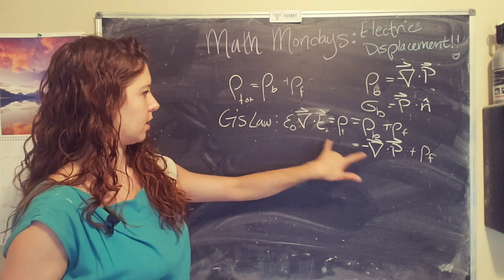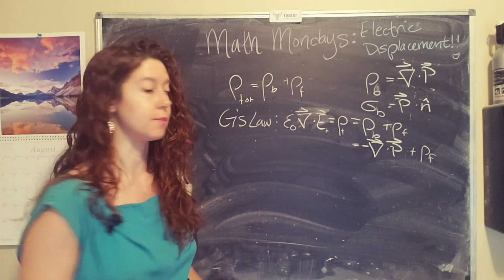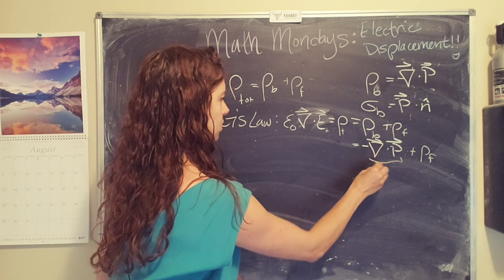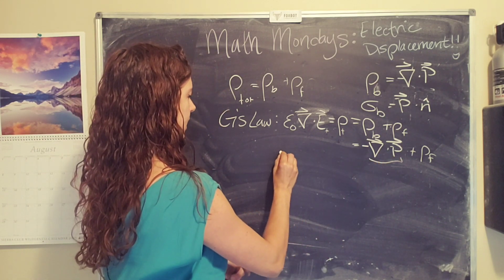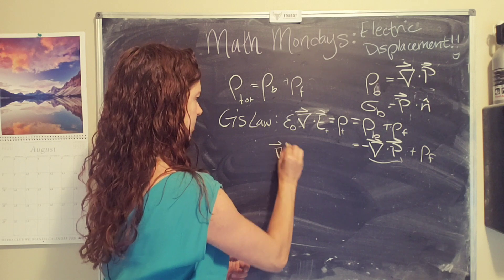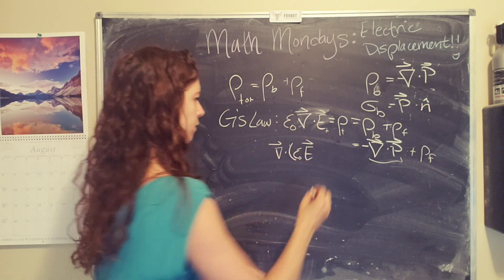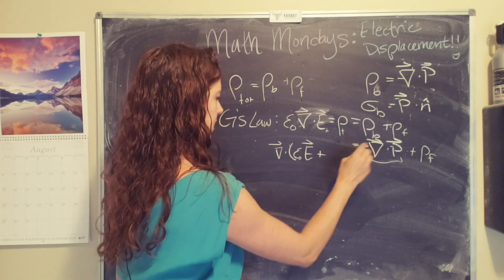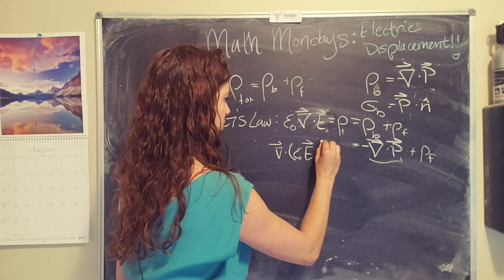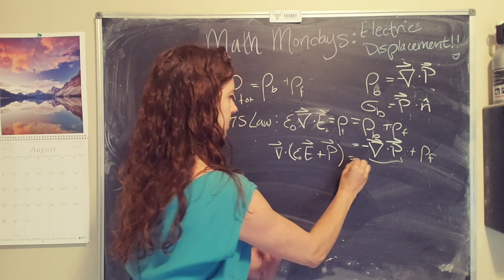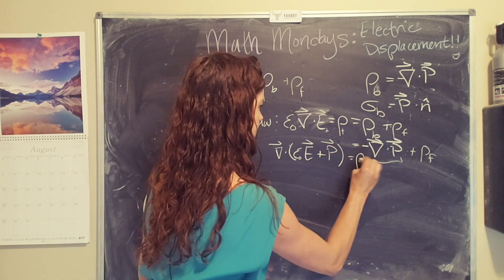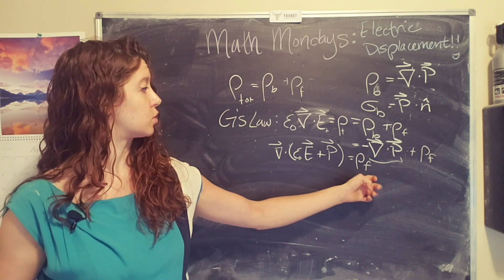Since del, those are the same terms, we're going to move this over to the left-hand side, and we are going to get del dot epsilon naught times E, this comes along for the ride, plus, because there's a negative sign here, plus the total polarization, equals the free charge density.